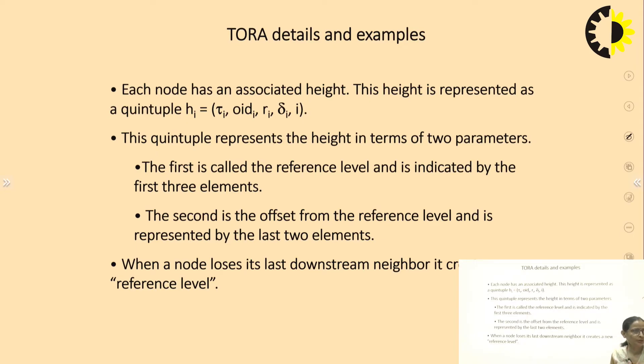In the case of TORA, each node has an associated height. This height is represented as a quintuple: hi equals (τi, oidi, ri, δi, i). This quintuple represents the height in terms of two parameters. The first is called reference level and second is called offset.